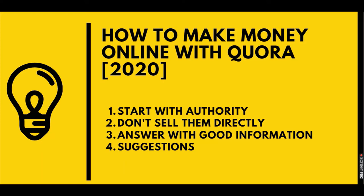There are a few steps you need to follow. The first thing is start with authority — give information about yourself, letting people know what you are doing, your previous experience, the advantages and the problems you faced before. Since we are selling a product called 'How to Grow on Instagram', we need to give brief information about how we've grown on Instagram and what problems we faced. The second thing is don't sell them directly — we shouldn't include any affiliate link in the answers.